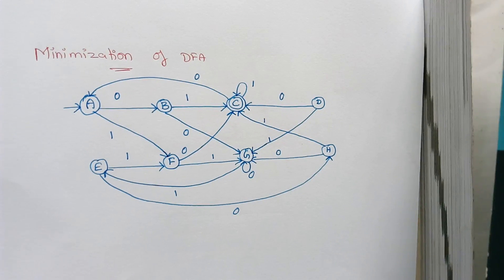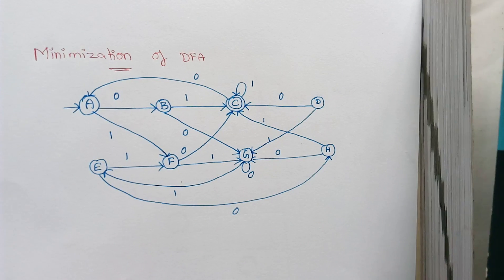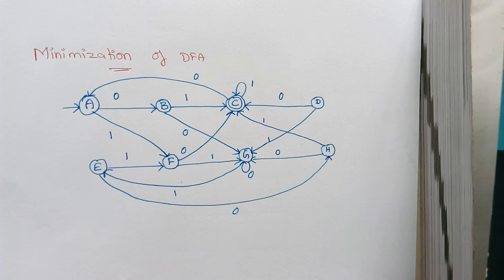Hello everyone. In this session we are going to see how to minimize a DFA. The reason why we want to minimize a DFA is to reduce the number of states. In order to check the complexity of a DFA, we should construct a DFA with a minimum number of states.